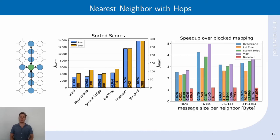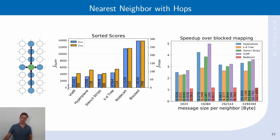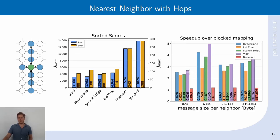Last but not least, we look at the nearest neighbor with Hobbs stencil — the nearest neighbor stencil augmented with two additional neighbors along one dimension. Looking at our scores, Vienna mapping outperforms our algorithms, but not by much. This is followed by hyperplane, stencil strips, and KD tree, with all of our algorithms outperforming the NodeCAD algorithm by a large amount. In terms of communication time, our algorithms are in the ballpark of Vienna mapping, achieving speedups of up to 4 compared to blocked mapping and consistently outperforming NodeCAD.